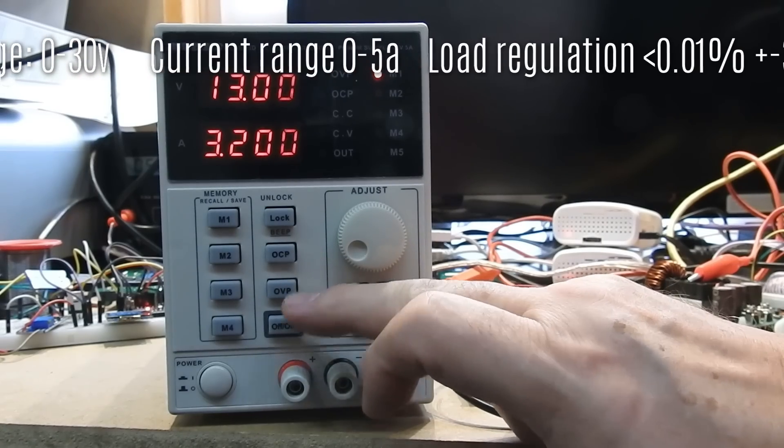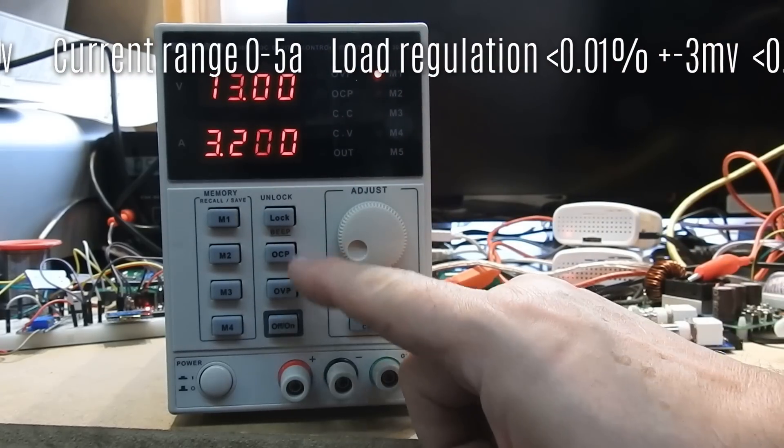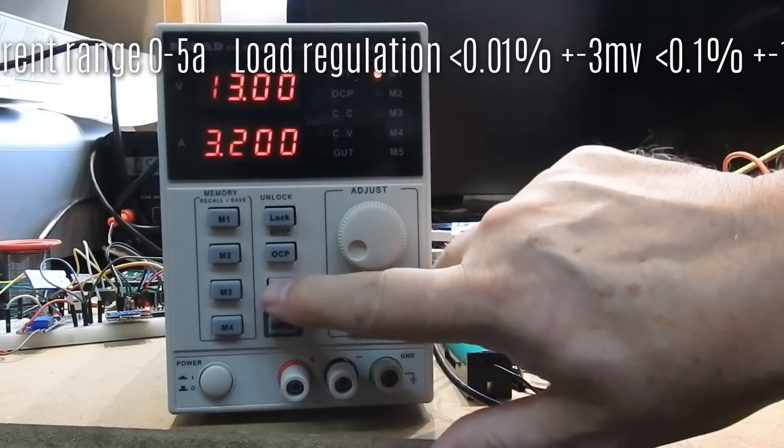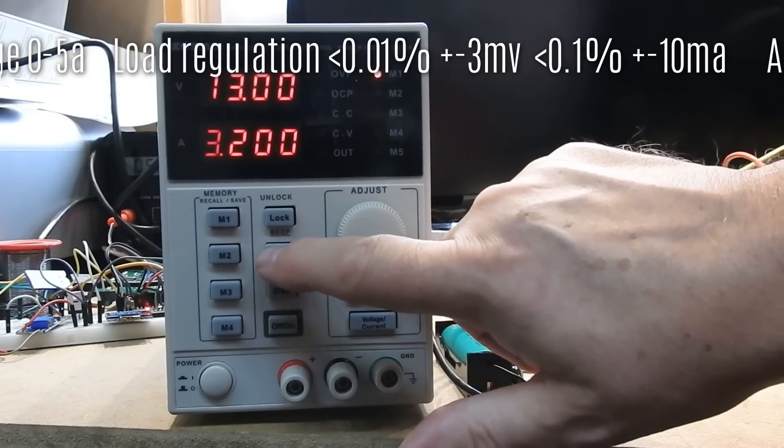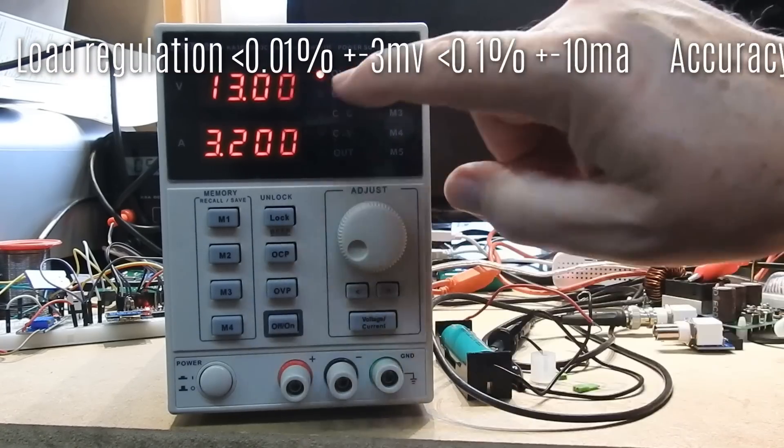The next two buttons are over voltage and over current controls. And in the case of the over current control, what that does is if you try and draw too much current, instead of just limiting the current, it will actually trigger the output to turn off.